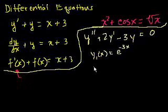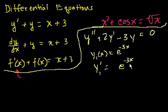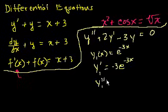They say y1 of x equals e to the minus 3x. So let's verify this is a solution. What is y1 prime, the derivative of e to the minus 3x? Using the chain rule: the derivative of e to the minus 3x is e to the minus 3x, and the derivative of the inside is minus 3. So y1 prime equals minus 3 times e to the minus 3x. Then the second derivative y1 double prime equals plus 9 times e to the minus 3x, since minus 3 times minus 3 gives us 9.